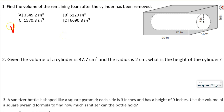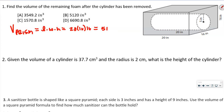So the volume of the prism first — and if you remember, that's one that's not on the formula sheet. That's length times width times height. So we're going to multiply 20 times 16 times 16, and I got 5,120 — and obviously that's inches cubed.